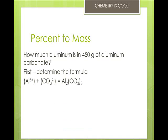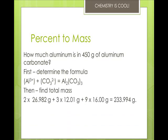So we know that aluminum has a plus 3, carbonate has a minus 2, so it's Al2(CO3)3. Then you find the total mass. So we're going to do that here. And that gives us a total mass of 233.994 grams. That's going to be our total that we divide by.